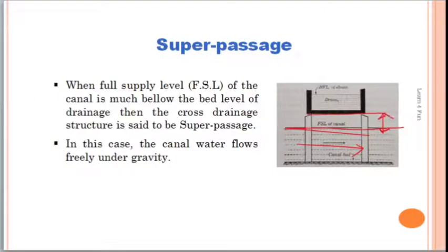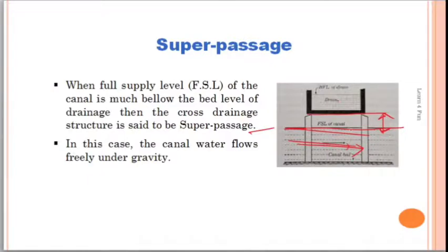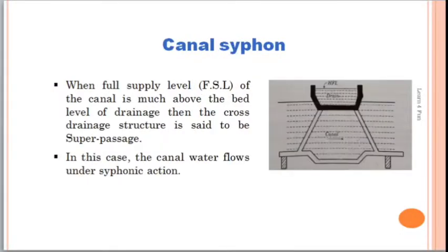The definition: when the full supply level of the canal is much below the bed level of the drainage, the cross drainage structure is said to be a super passage. In the case of super passage, the water in the canal runs freely under the action of gravity.